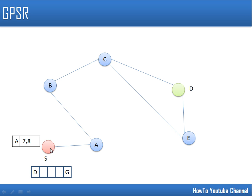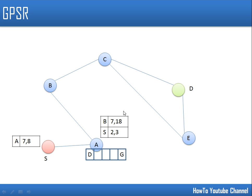Node s forwards the packet to node a. Now a will check its neighbor table and compare whether any neighbor is closer to d than a itself. Node a is not having any neighbor which is closer to d, so greedy forwarding fails at this point. The node marks the packet mode as perimeter (P), meaning perimeter forwarding is now going to be used. The second field is updated with node a's information.